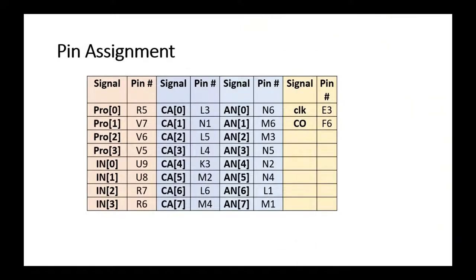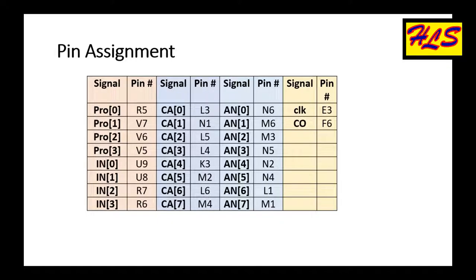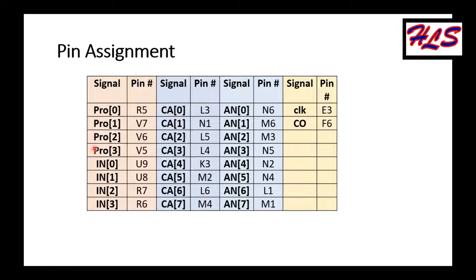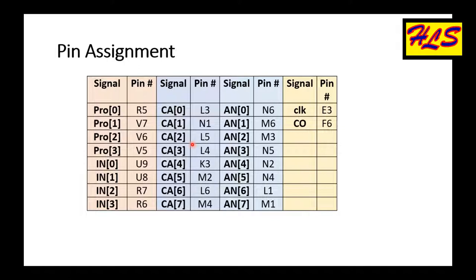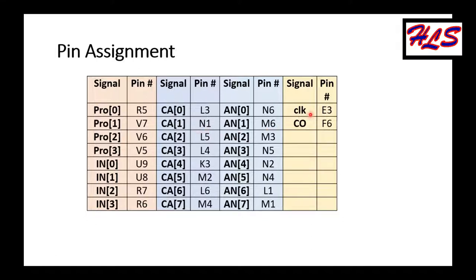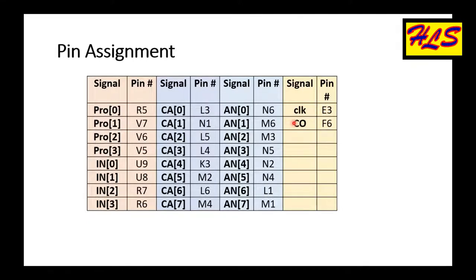This is the pin assignment for the vending machine circuit. The first column represents the input by the user and the product output. The next two columns are the pin out for the cathode and anode for the 7-segment displays, and the last column represents the carry out and the clock. These are the pins on the FPGA Nexus 4 board assigned to each signal of the Verilog module.